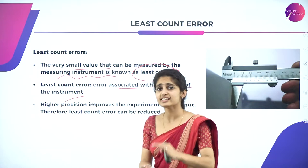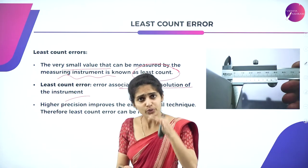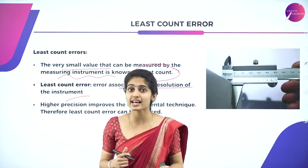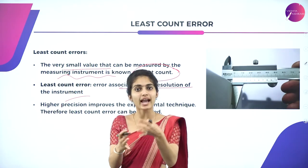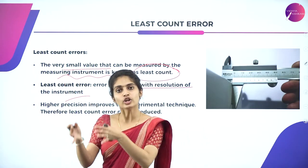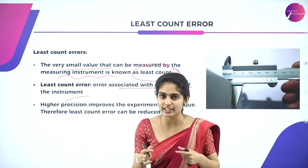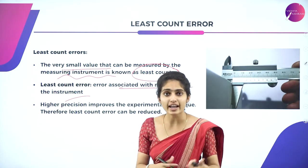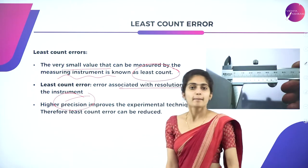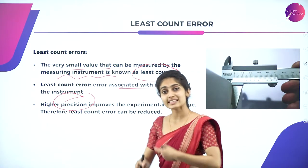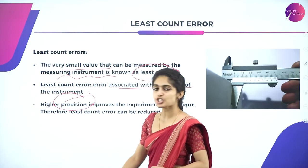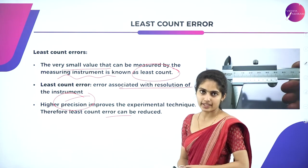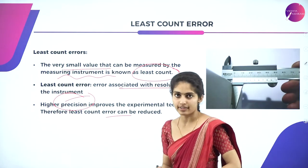In order to decrease the least count error, accuracy must be induced — the measured value should be very close to the true value. For accurate values, high precision is a must. Higher the precision, lower the error obtained.